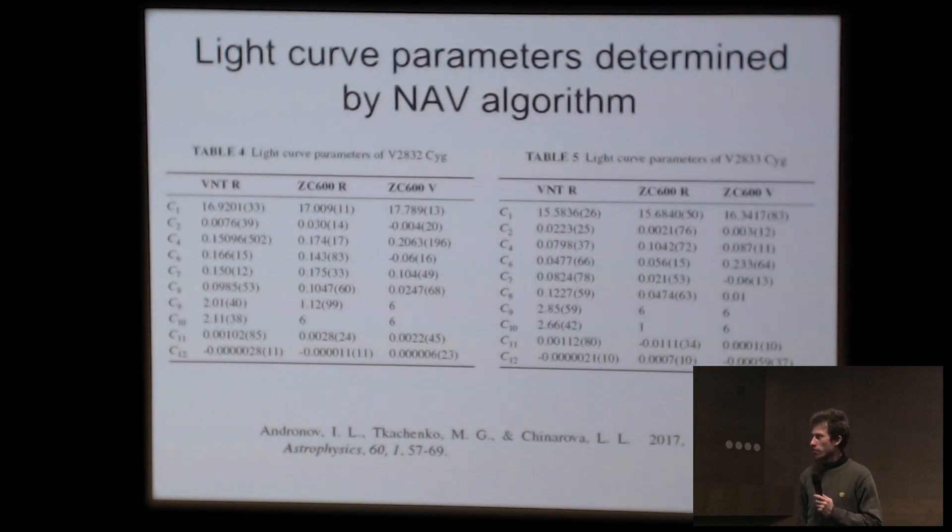Mainly it is the mean brightness of the system, the depths of primary and secondary minima, two parameters which show if there is an O'Connell effect or not, and some other parameters. It can allow you to improve the value of the period of the system if it is not well determined. But we got it using O-C analysis, so we did not do it using this algorithm.